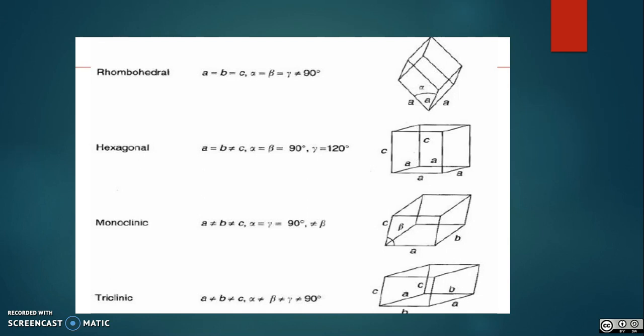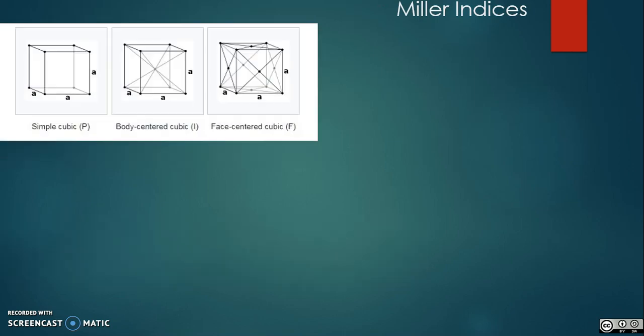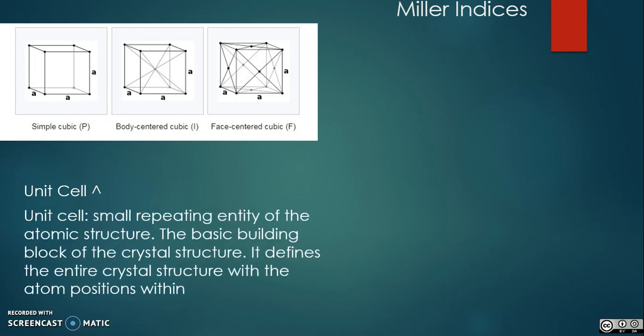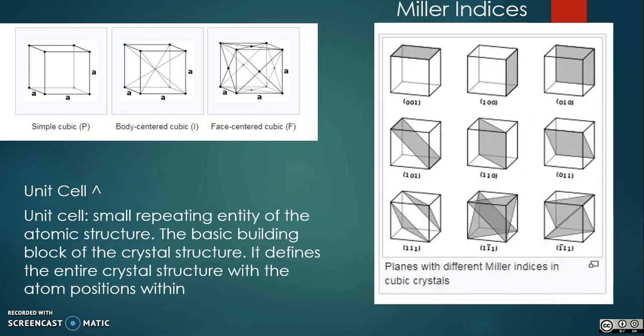The smallest group of particles in the material that constitutes the repeating pattern is the unit cell of the structure. The unit cell completely defines the symmetry and structure of the entire crystal lattice, which is built up by repetitive translation of the unit cell along its principal axis. The repeating patterns are said to be located at the points of the Bravais lattice.